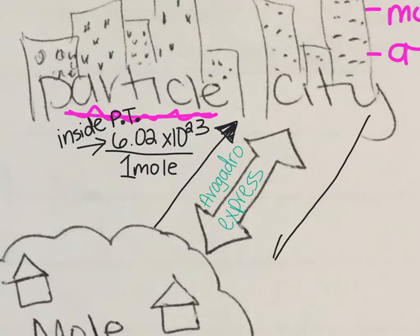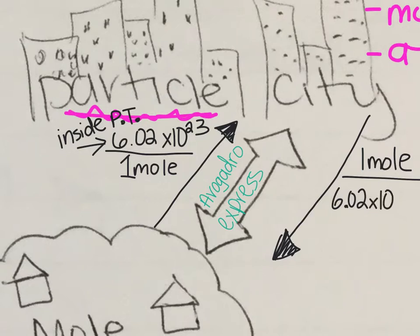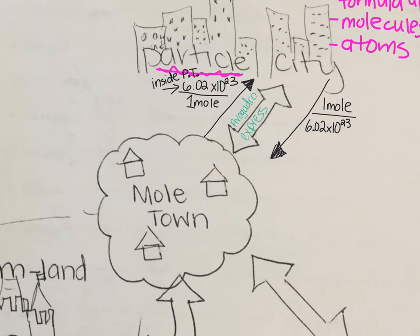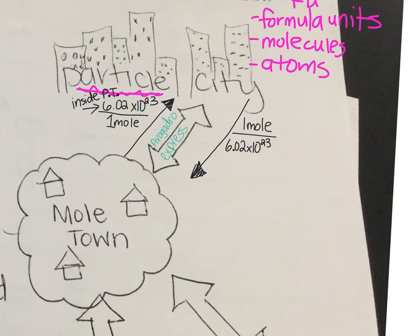If I'm traveling from Particle City to Moletown, you flip those two. So you're going to have one mole on top, and you'll have 6.02 times 10 to the 23 underneath. Do we see that? And so like I said, at least for your homework or to start out, use this map, and then you'll know where the numbers go. You just plug them right in. You figure out where you're going, where you're coming from, and that way you put the numbers in the right spot. And then eventually you'll learn the actual math part of it.